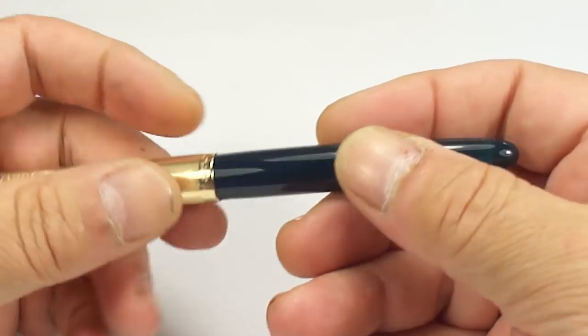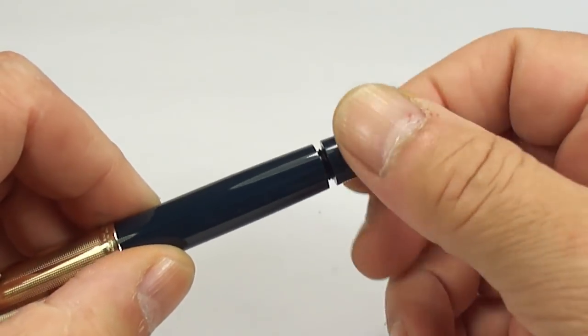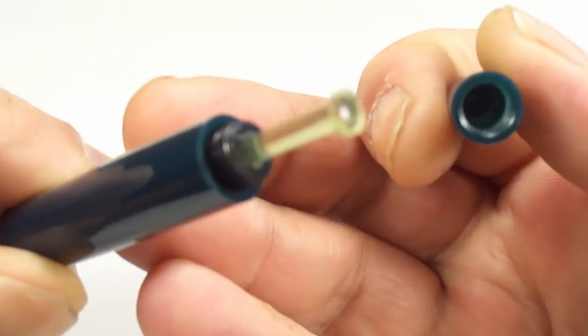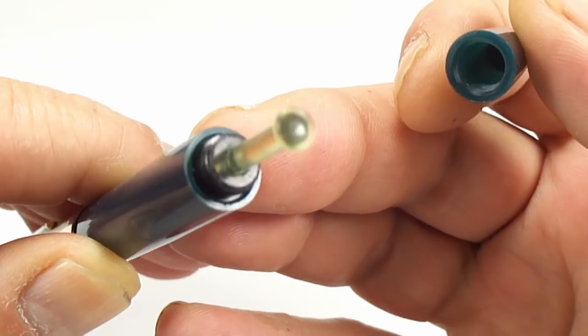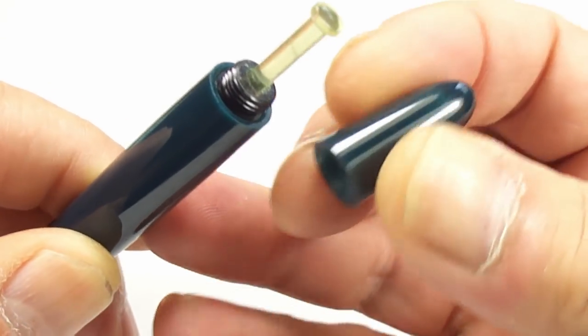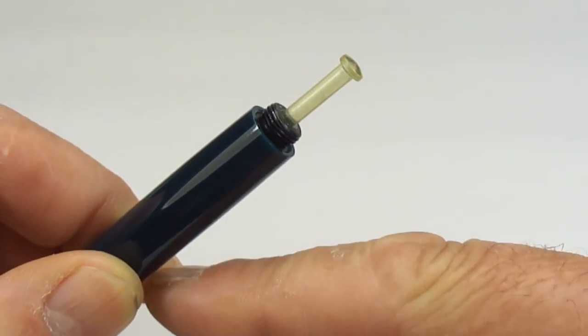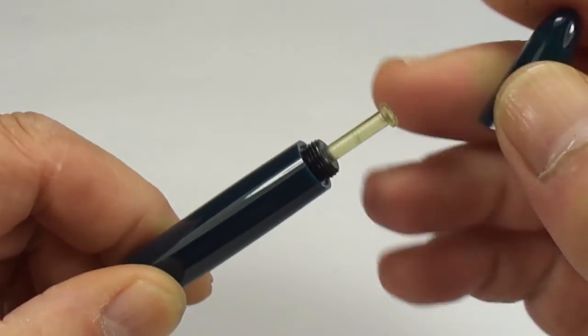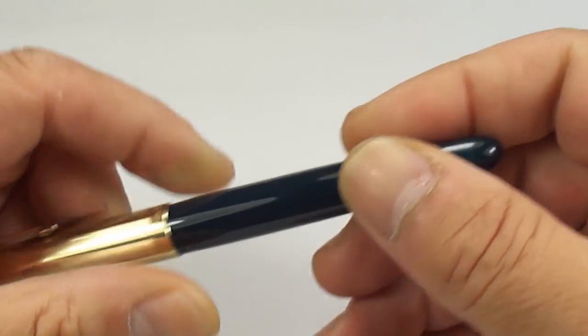Now, this one being a Vacumatic means that we simply unscrew the cap at the end there. And there you go, you can see it's got this plastic plunger to the end or underneath the blind cap. There's the blind cap. And what we do, we dip the nib in the ink and we press down numerous times on the plunger to fill the pen.